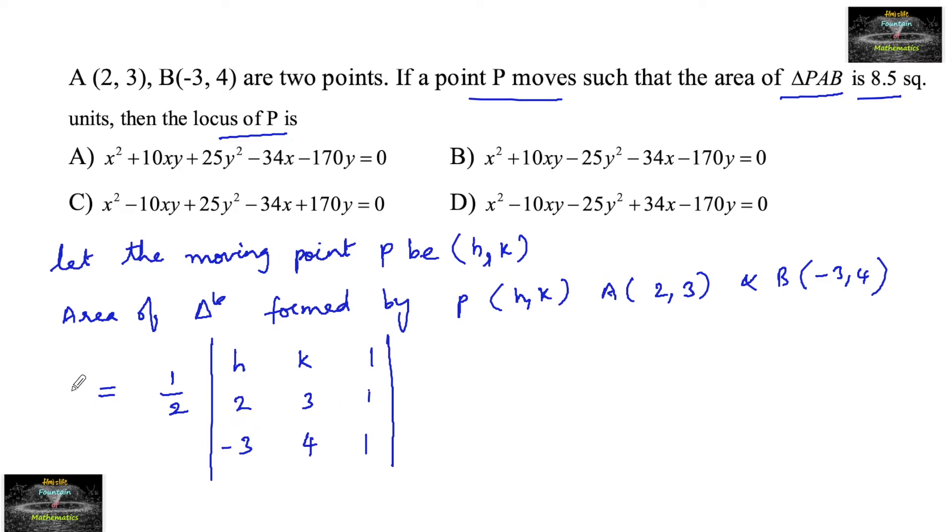So let me take here delta is equal to 8.5 square units. So that we can write here H, K and 1; 2, 3 and 1; minus 3, 4 and 1, determinant of, is equal to 8.5 times 2, that is 17.